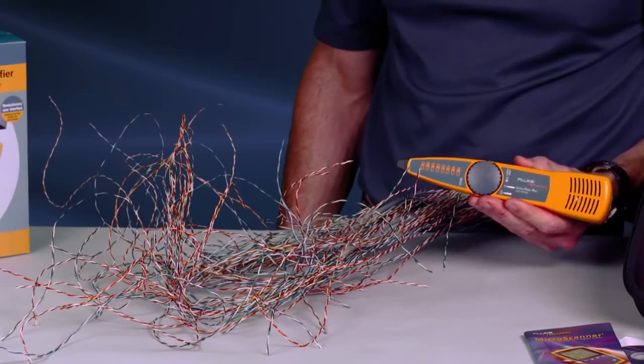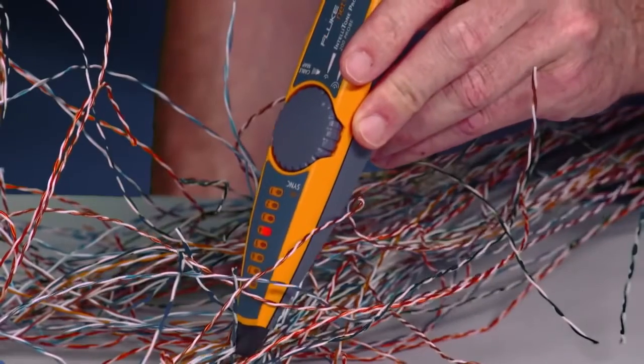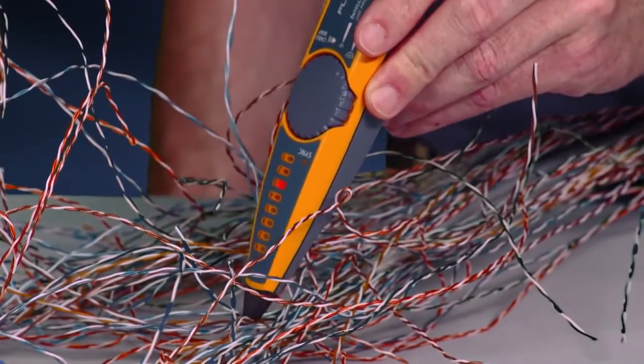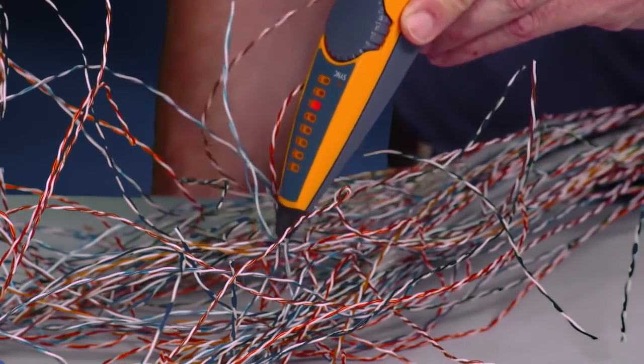We've connected the toner to a random pair in our rat's nest of cabling. It's no problem for the IntelliTone Pro from Fluke Networks. The IntelliTone Pro finds the right wires every time.